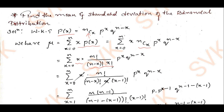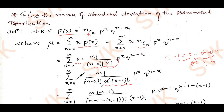I am simplifying the x! term. As you know, n! can be written as 1·2·3·…·(n−1)·n, which equals (n−1)!·n. In the same manner, I write x! as x·(x−1)!. In the numerator we have x and in the denominator we also have x, so these two terms cancel.